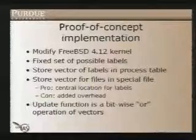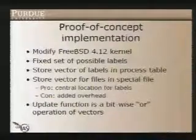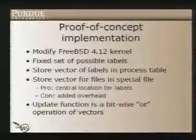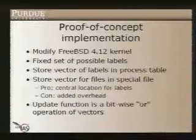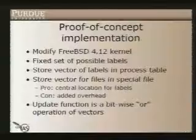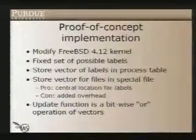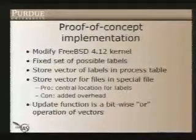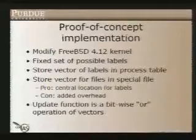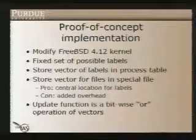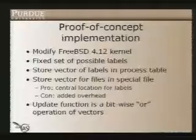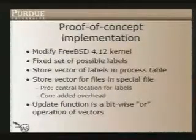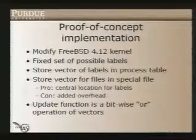I'm currently working on a proof-of-concept implementation by modifying the FreeBSD 4.12 kernel. I have a fixed set of possible labels, primarily focusing on user IDs. There is a global table of what the labels are, and we only need to store a small bit vector of labels directly in the process table. Files are stored in a special central file, so we can easily determine which file has which label and which label is contained in which files. The disadvantage is added overhead when updating by having to access that file. For the update function, we only need bitwise OR-ing of all these vectors.